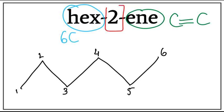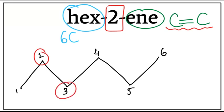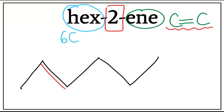This 2 tells us the location of the double bond, which is the second carbon. So the double bond is between the second and the third carbon. Let's get rid of these numbers and draw the double bond between the second and the third carbon. This is the structure for hex-2-ene, where the double bond is between the second and the third carbon.